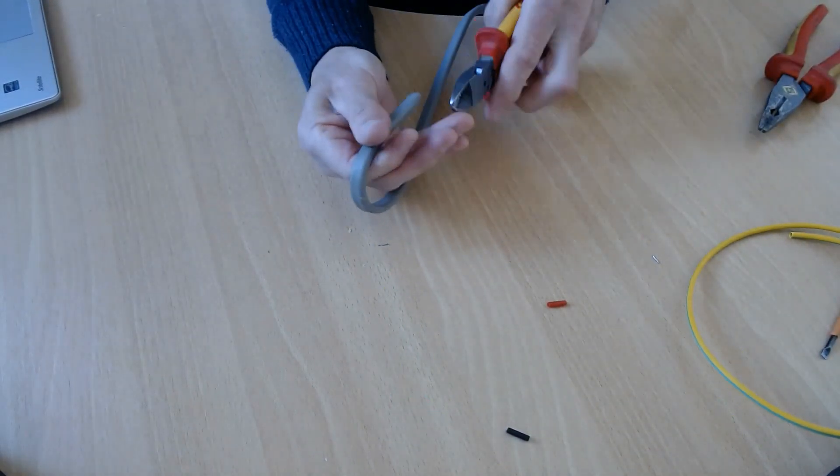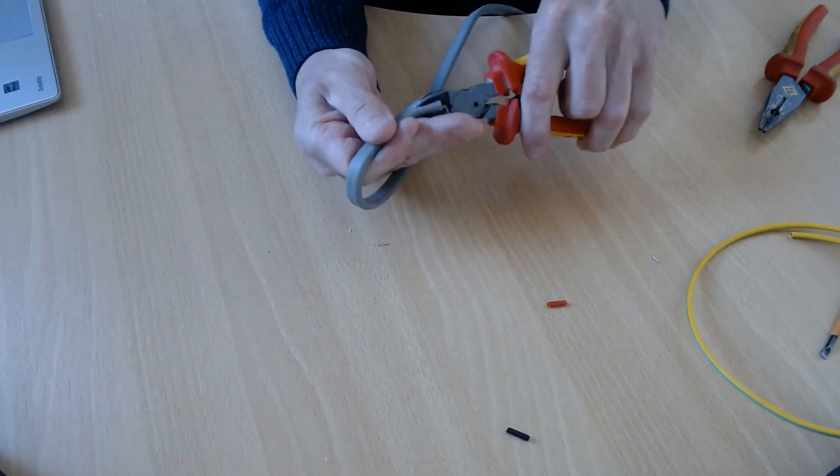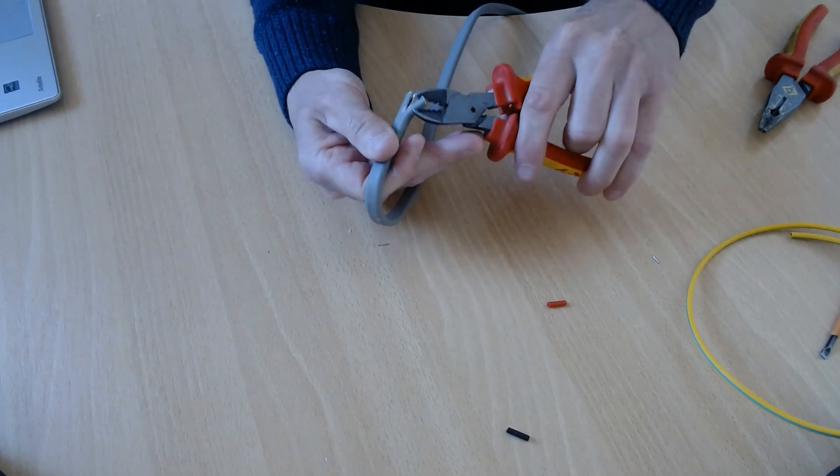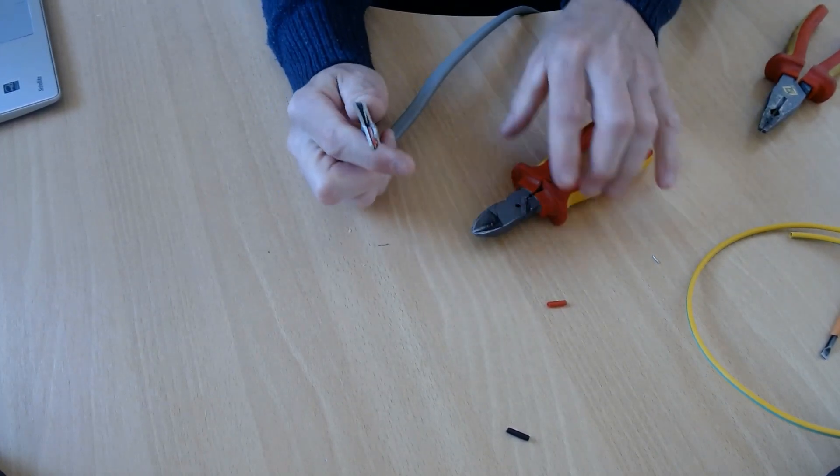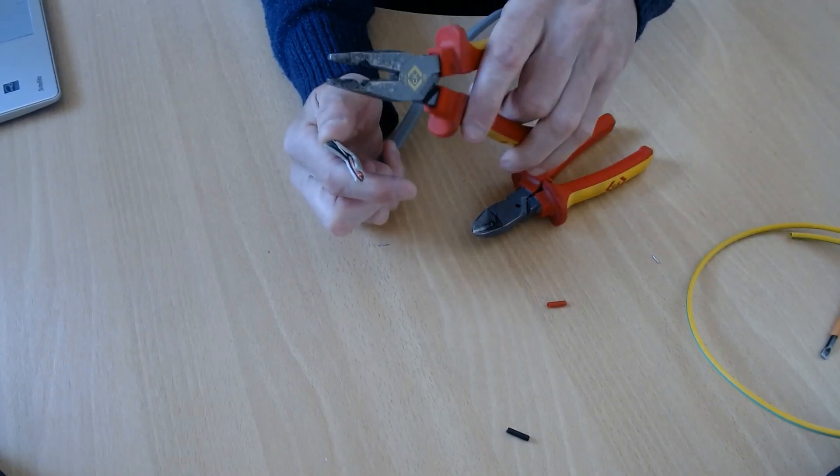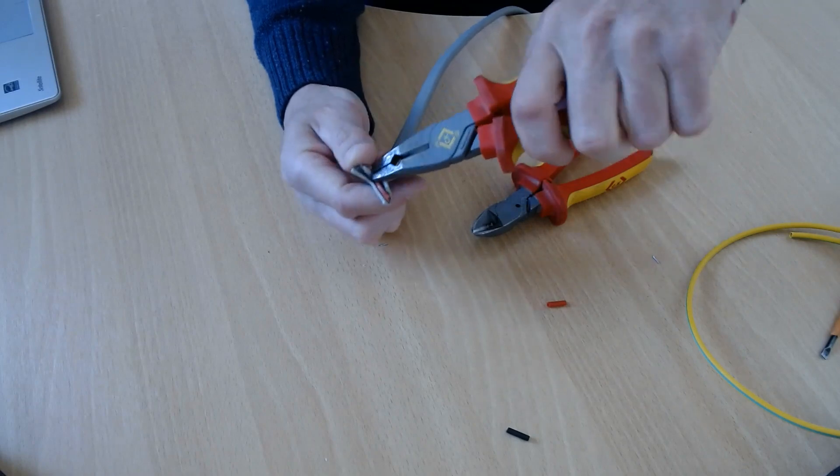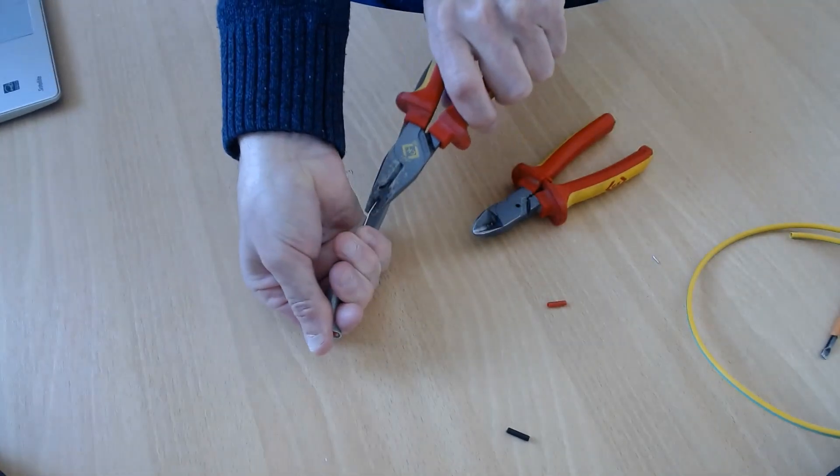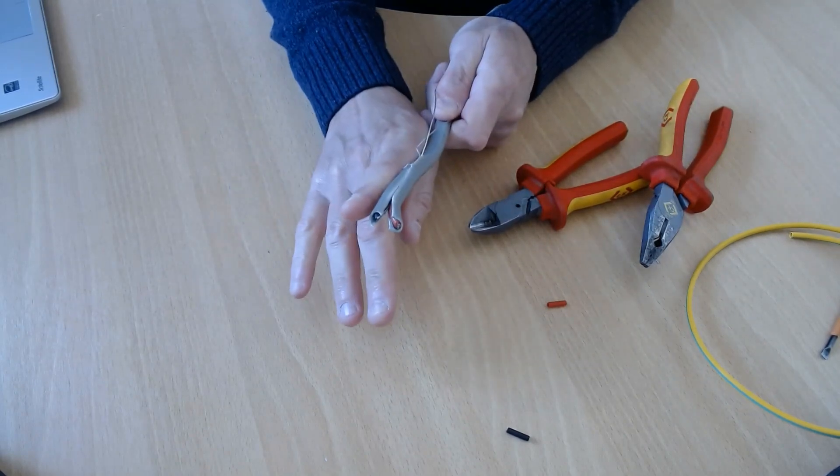Get the split down the middle there. You can use the pliers if it's easier. Grab the earths and then pull that, again about the length of your finger.